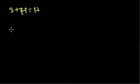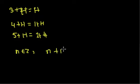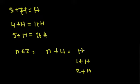So for any integer n in Z, n+H will be either H, or 1+H, or 2+H. These are the only three possible left cosets for the subgroup H = 3Z.